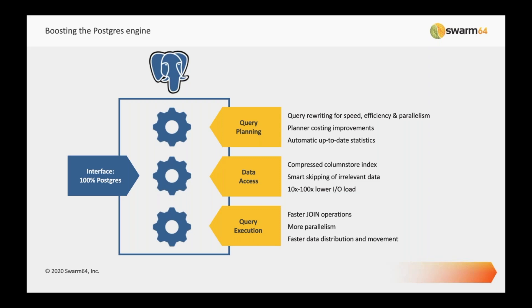Let's look at the second part: data access. One core observation is that if you cannot move the data fast enough into the processing chain, you will not see an acceleration. One very attractive way this is solved is with a column store index.